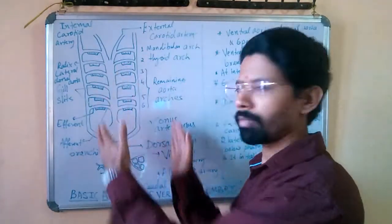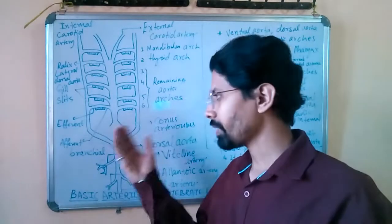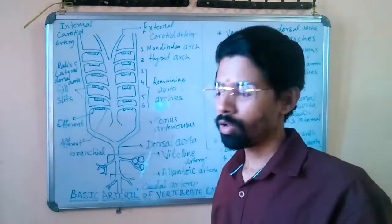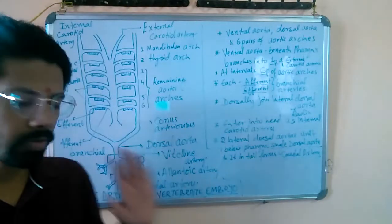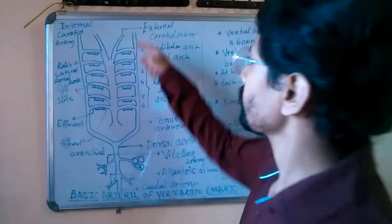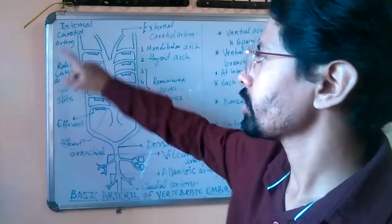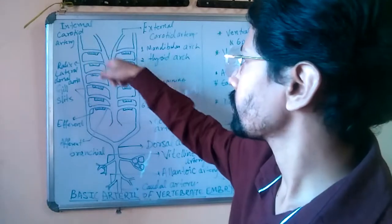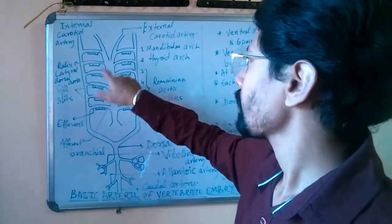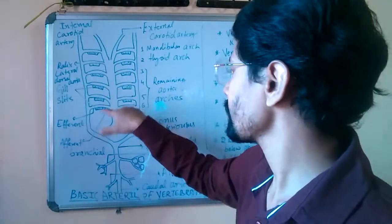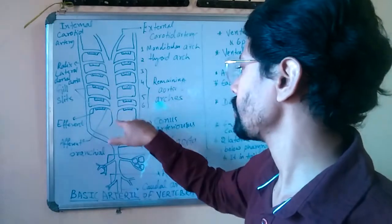This is a diagrammatic representation of the vertebrate embryo having the arterial system. If you see the diagram very carefully you can understand it. These two regions are the internal carotid arteries. This region what you see is the external carotid artery. Then there is a branching of these into six arches — six aortic arches are branched here.